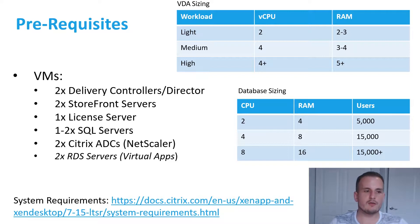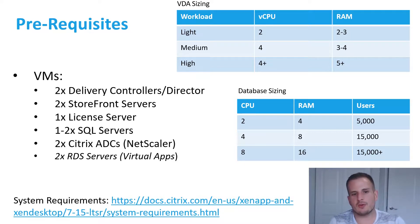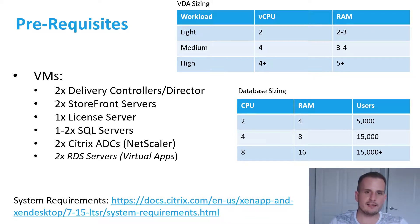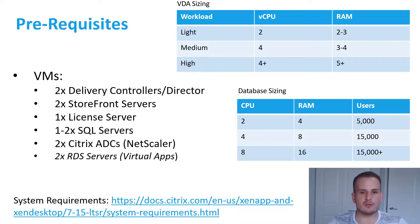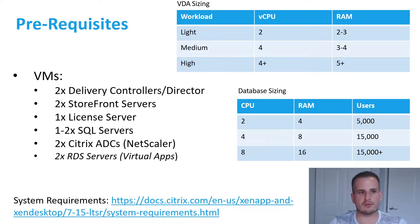Depending on whether you're doing virtual apps or virtual desktops, you may need RDS CALs. If you're doing Citrix virtual apps, you'll want at least two RDS license servers — unlike Citrix, which gives you a 90-day grace period, RDS doesn't work the same way, so you'll want a second for redundancy. On the right you'll see some sizing tables, which I put there because I get asked questions all the time about sizing and hardware requirements.